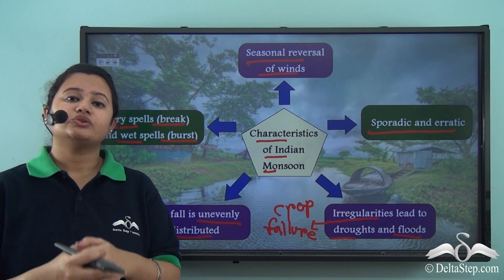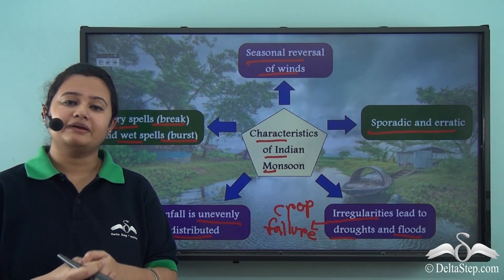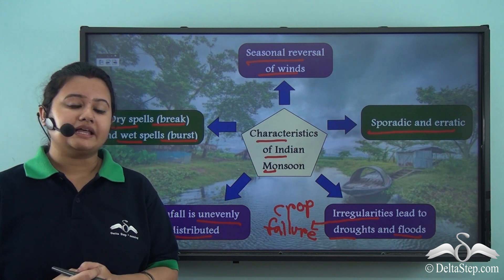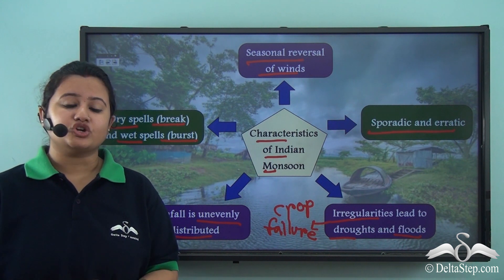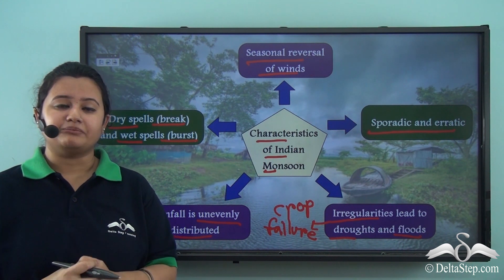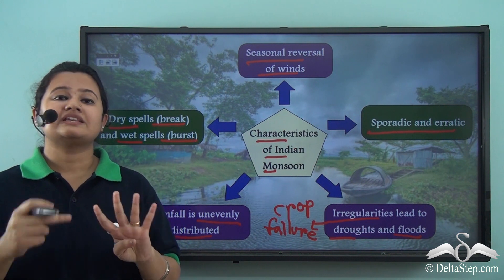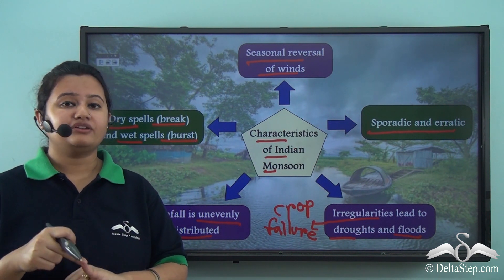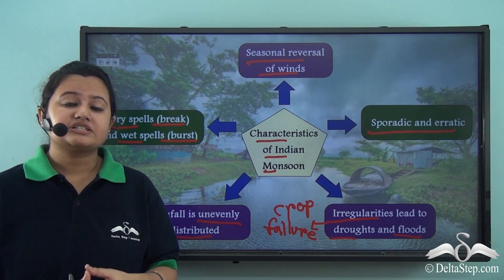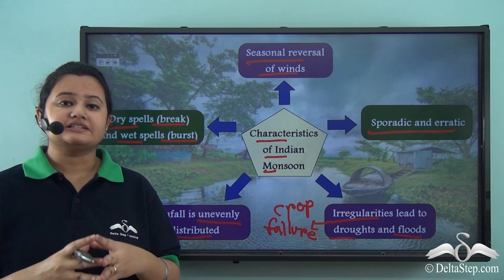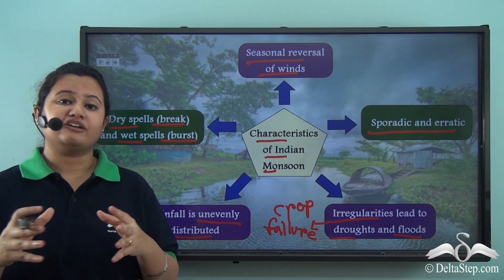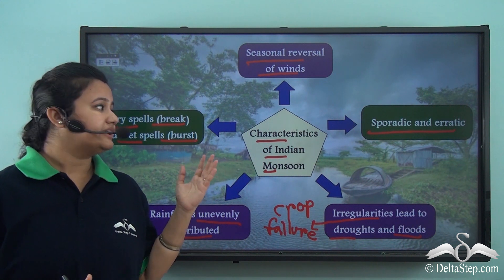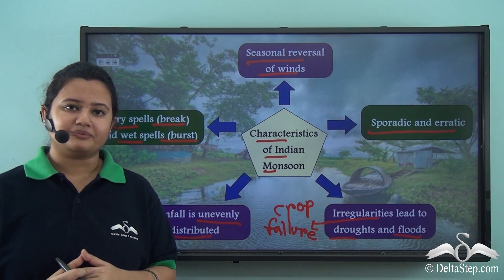This brings us to the end of the chapter on climate of India. In this chapter we learned that India enjoys tropical monsoon climate with four distinct seasons — summer, advancing monsoon, retreating monsoon, and winter. We discussed each of these seasons in detail, and finally in this lesson we discussed the characteristics of Indian monsoon.